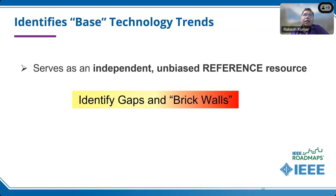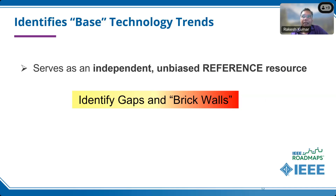Why does anybody need these base technology roadmaps? Most companies are short-term in their planning. Funding agencies use these roadmaps to decide which technologies to fund. Most CEOs tell me they find the IEEE roadmap to be an independent, unbiased reference for basing their work on — they can't otherwise determine how their internal work relates to what the industry is doing overall. That's the value we bring to the industry as a whole.